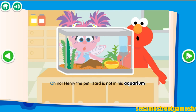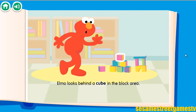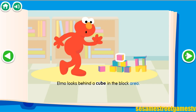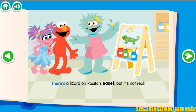Oh, no! Henry the pet lizard is not in his aquarium. Elmo looks behind the globe. Elmo looks behind a cube in the block area. There is a lizard on Rosita's easel, but it's not real.